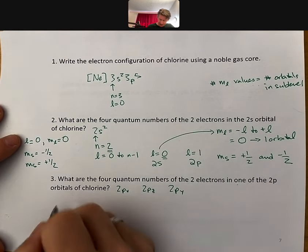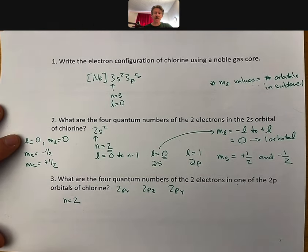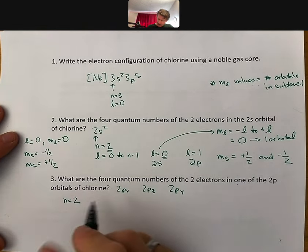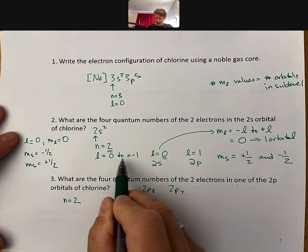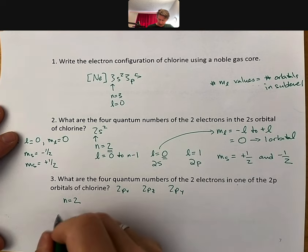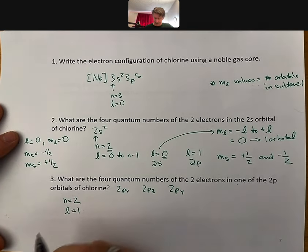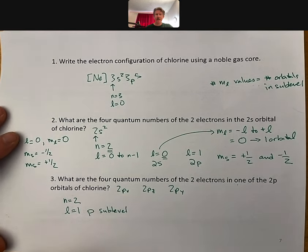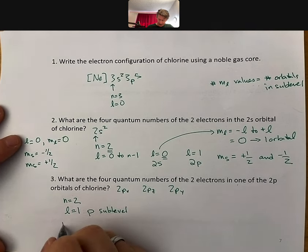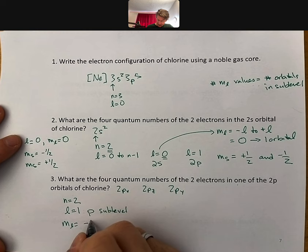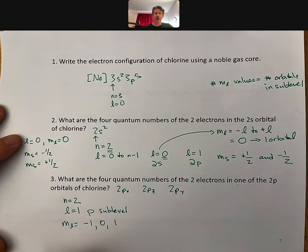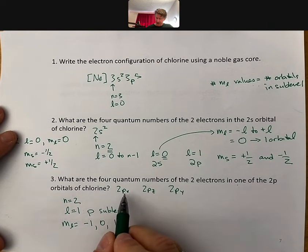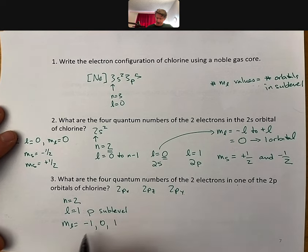First off, n equals 2 for all of these. You can see the two right there in front. Then we have up here, l equals 0 to n minus 1. When l equals 1, that's the p or p sublevel. And within p sublevel, m sub l equals minus 1, 0, and either plus 1 or 1. That means there are three orbitals. We know that because there are 2px, 2py, and 2pz. So, you can see these three orbitals are indistinguishable.